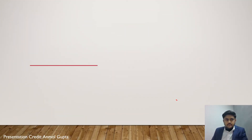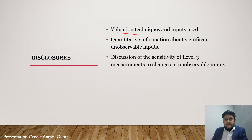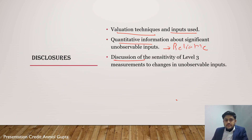There are three required disclosures for fair value measurements: first, the valuation technique used and the level of input applied; second, quantitative information about significant unobservable inputs, including the source and reliability of the information; and third, a discussion of the sensitivity of Level 3 measurements — meaning how much the fair value of the asset will change due to changes in unobservable inputs.